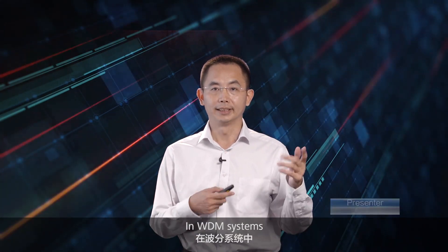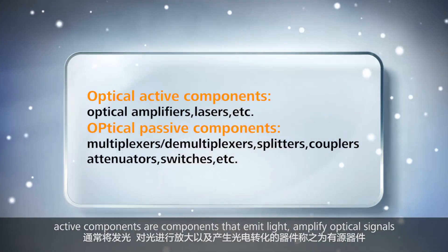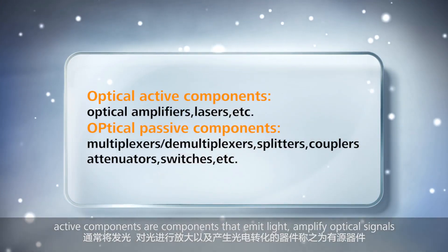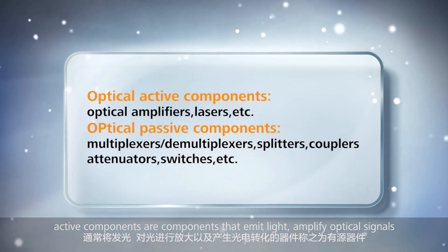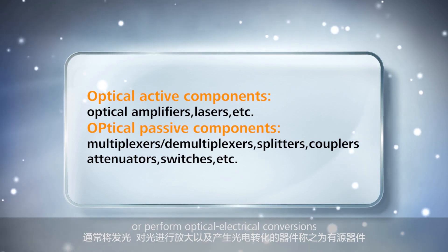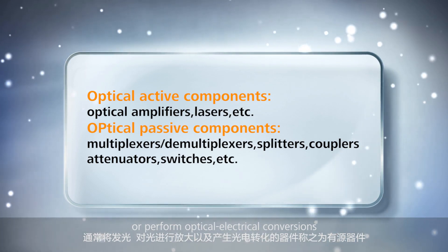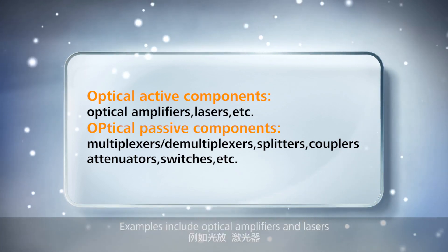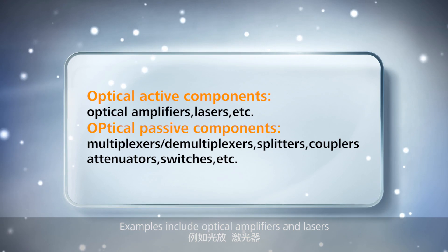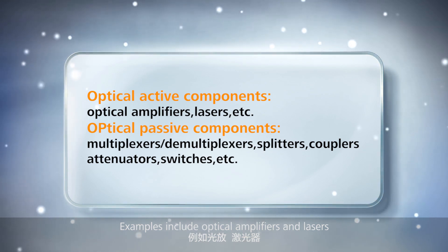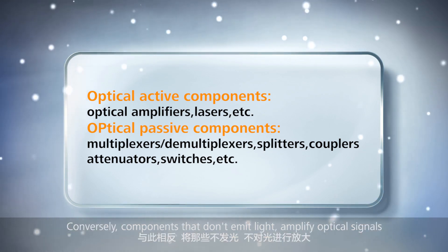In WDM systems, active components are components that emit light, amplify optical signals, or perform optical-electrical conversions. Examples include optical amplifiers and lasers.